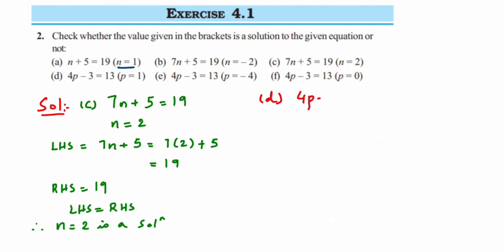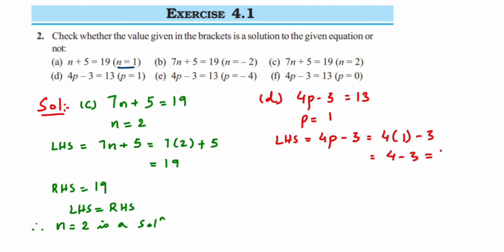The fourth question is 4P minus 3 is equal to 13, and P=1. LHS is 4P minus 3 — substitute P=1: 4 times 1 is 4, and 4 minus 3 is 1. The RHS is 13. Clearly LHS is not equal to RHS, so therefore P=1 is not a solution.